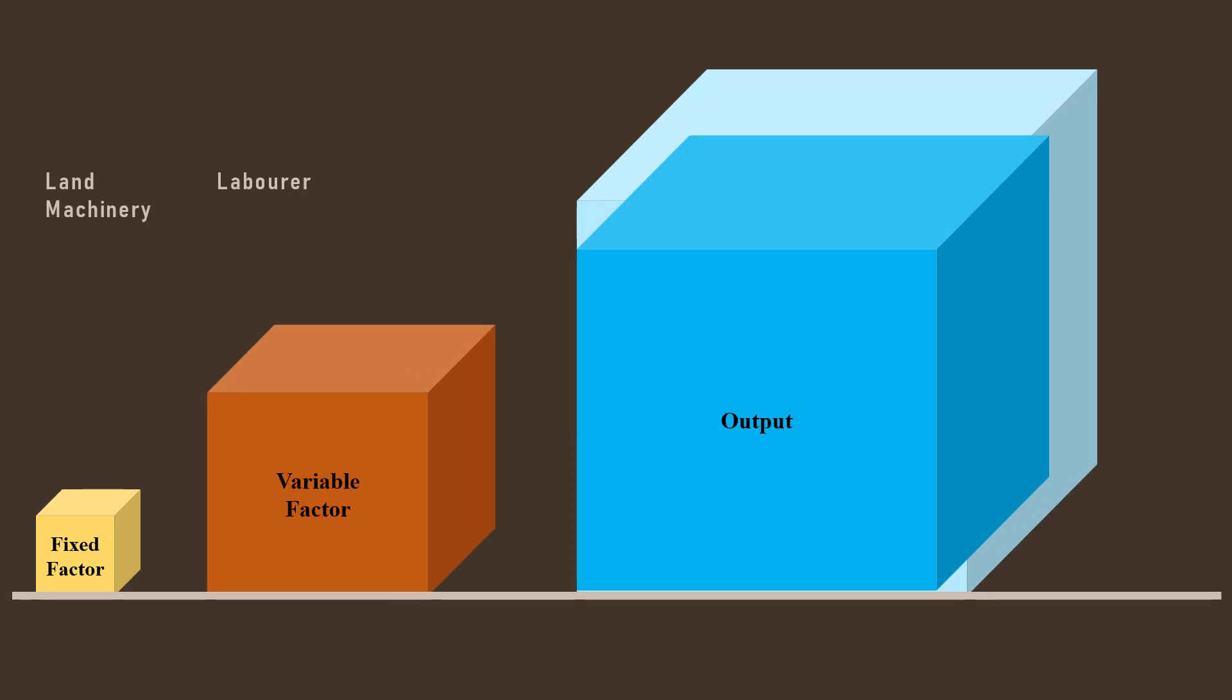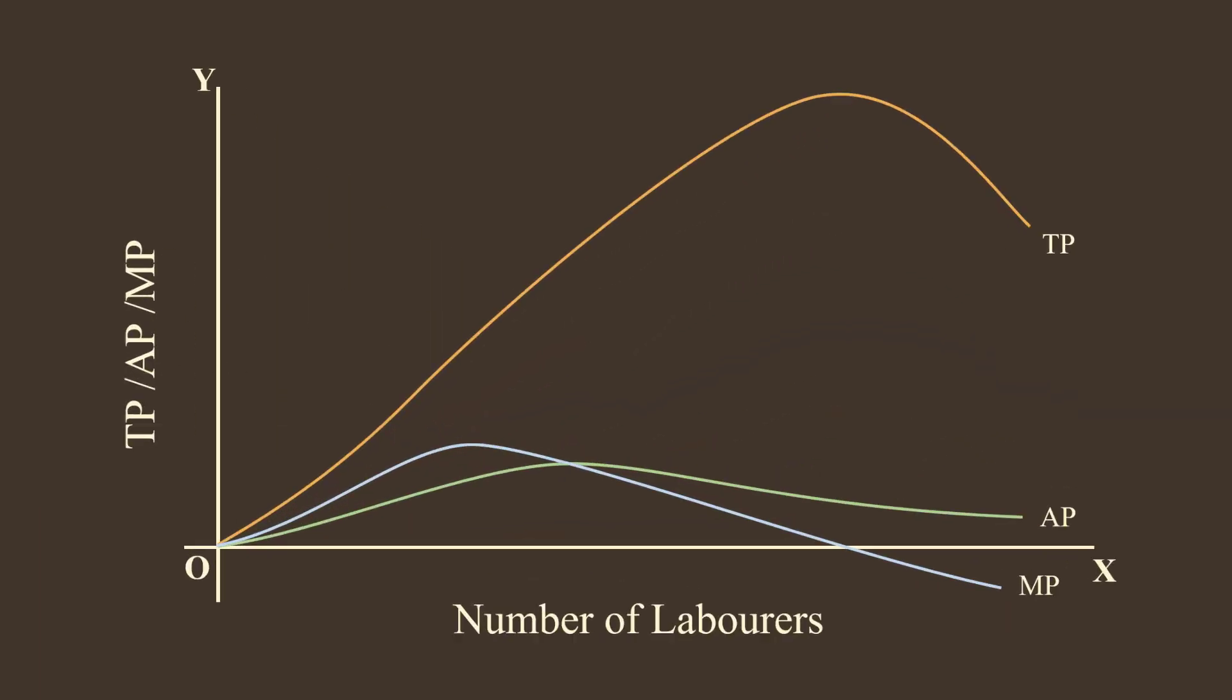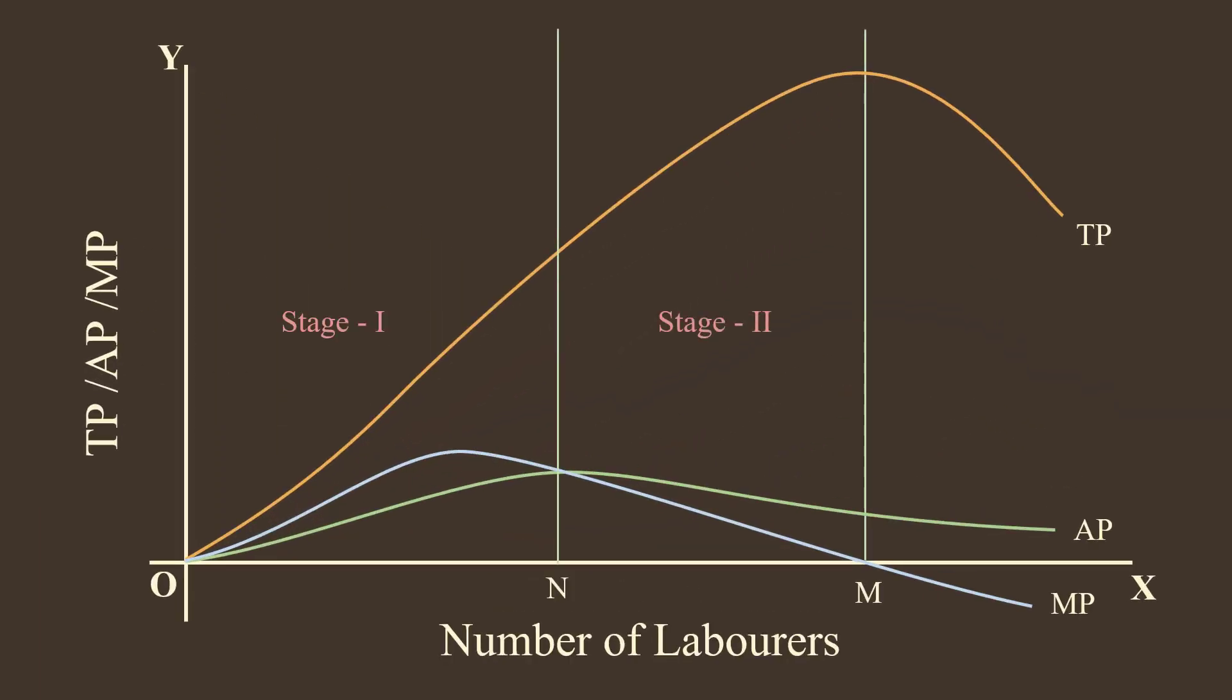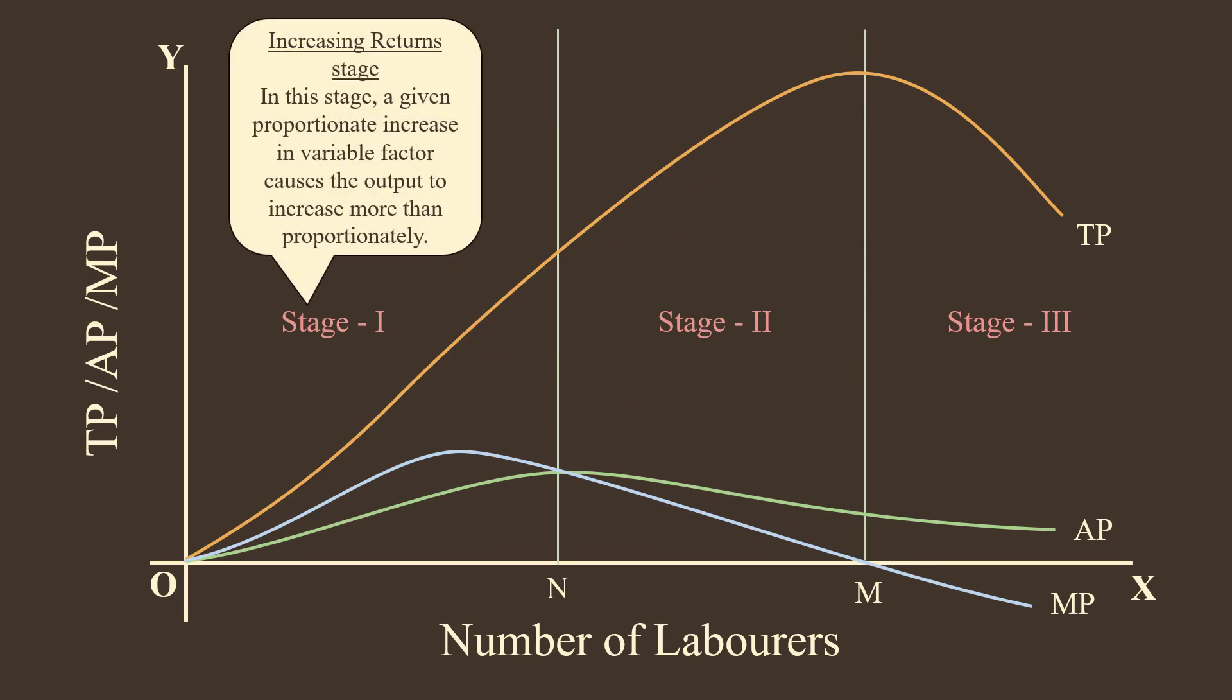Finally, explain in terms of graph. The graph illustrates the Law. Stage 1: Increasing Returns Stage.